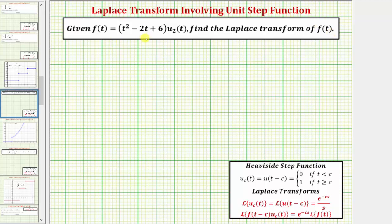Notice how f of t is a function of t times a unit step function, or a Heaviside step function, where u sub c of t equals zero if t is less than c, and equals one if t is greater than or equal to c. So because we have u sub two of t, this equals zero if t is less than two, and equals one if t is greater than or equal to two.